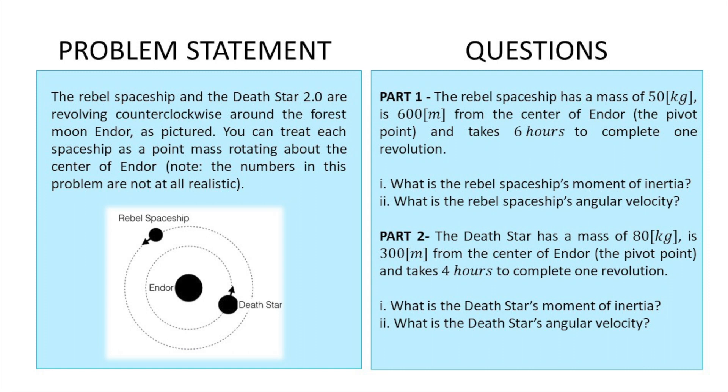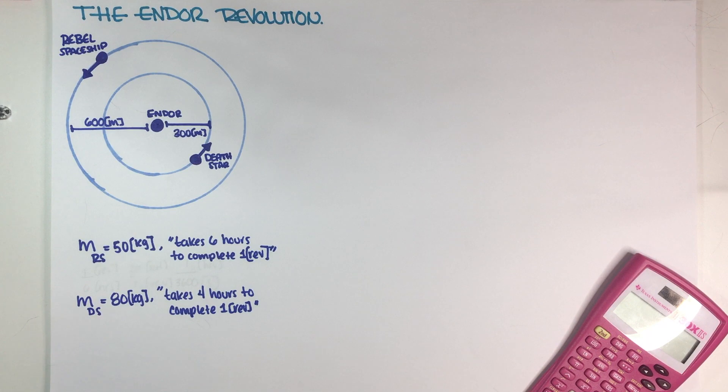So now we have two parts to this problem. The first part refers to the Rebel spaceship and the second part refers to the Death Star. For both the Rebel spaceship and the Death Star, we are given a mass and a distance from Endor, which is the pivot point, and we are also given how many hours it takes to complete one revolution. I have all of the relevant information written here. Let's go ahead and start this problem.